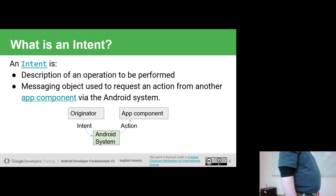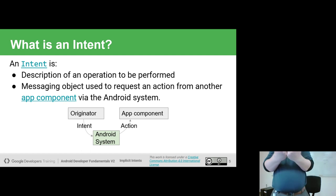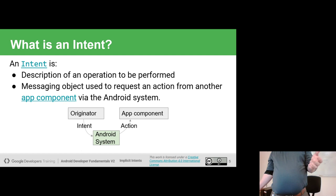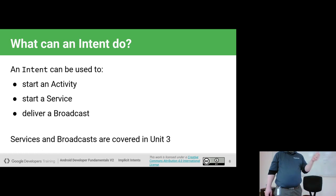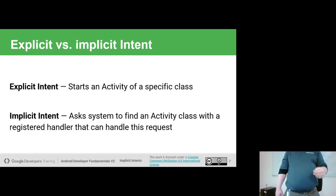To recap: an intent is a description of something we want to do, of an operation we want to perform. We use it to tell the Android operating system to go load up the app component that can do that. Usually that means loading up an activity, but it can also mean other kinds of components. We can use it to start an activity, start up services, or deliver broadcasts — though we'll talk about services and broadcasts in unit 3. Right now we're focused on activities.